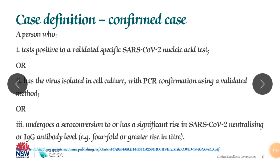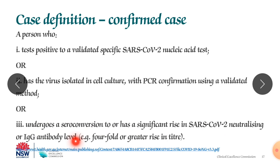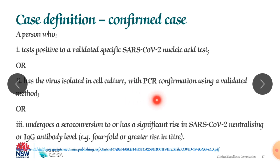The case definition: A confirmed case is a person who tests positive to a validated specific SARS-CoV-2 nucleic acid test, or has virus isolated in cell culture with PCR confirmation, or undergoes seroconversion with a significant rise in SARS-CoV-2 neutralizing or IgG antibody level of fourfold or greater rise in titer. By any method — rapid test, RT-PCR, or others — the patient is identified as COVID-19 positive and cases must be confirmed before proceeding.